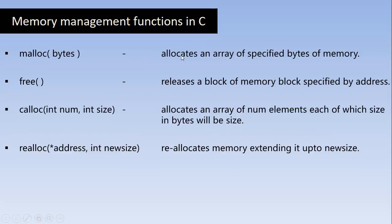Today we are going to learn how the calloc function works. The main difference is that calloc allocates a number of blocks, each of whose size is specified by the size parameter. malloc allocates only a single fixed block of memory whose size is specified by the number given.